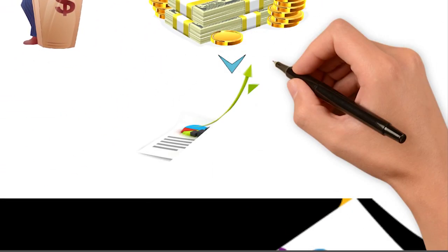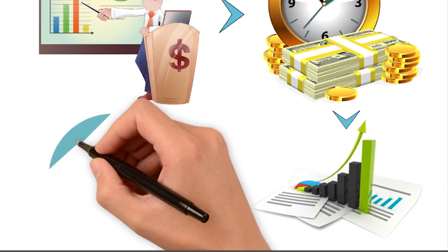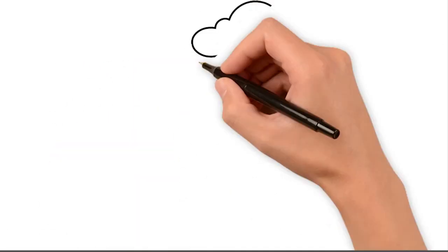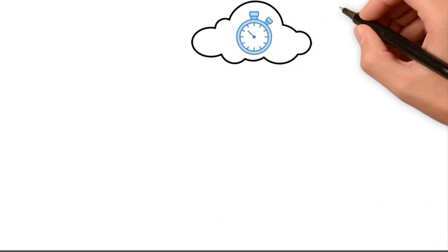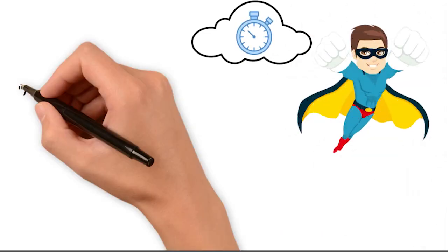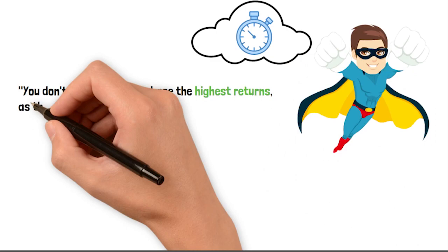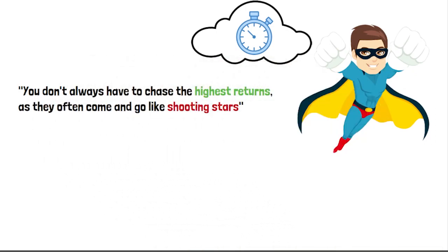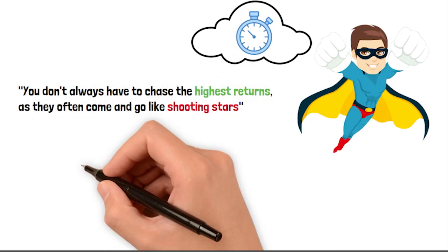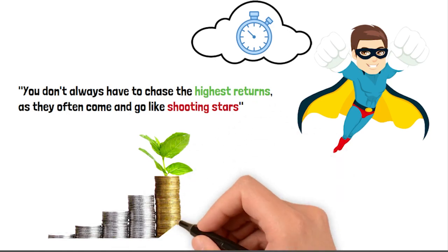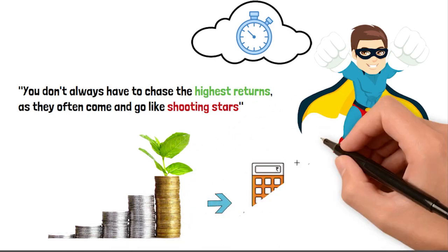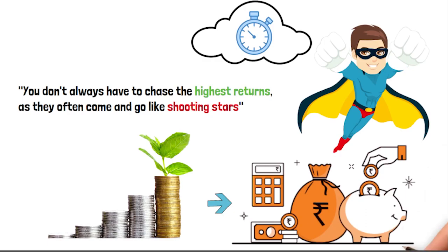If you want to be a better investor, the most crucial thing you can do is increase your time horizon. Time is the superhero of investing, and it can work wonders for your money. You don't always have to chase the highest returns, as they often come and go like shooting stars. Instead, focus on earning pretty good returns that you can stick with over the long haul. That's when compounding goes wild and can work its magic on your investments.